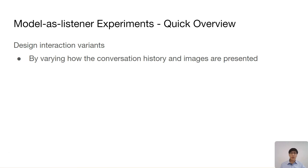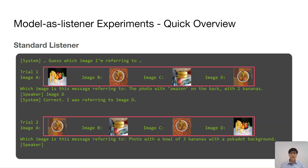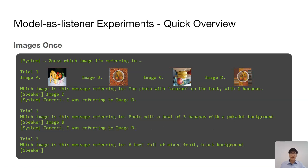Next, I'll give a quick overview on how we also evaluate the models as listeners using similar ideas. When creating variants of the listener experiments, we don't manipulate the instructions and instead change how the conversation history and images are presented. In the standard setup for a listener evaluation, we show the images in every trial in shuffled order. We also have an interaction variant where the images are shown in every trial without shuffling. We also have a variant where the images are presented only once in the beginning of the game, with all trials assuming the same image order. Comparing this variant with the previous one, we can understand how input complexity, especially the number of images, impacts the models.